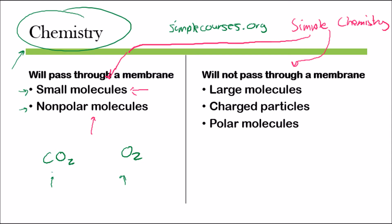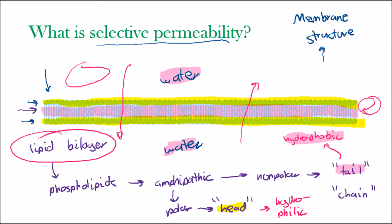In contrast, molecules that will not pass through a membrane include large molecules. That makes sense because all the phospholipids are closely bunched together, so there's no room for a large molecule to pass through the membrane.